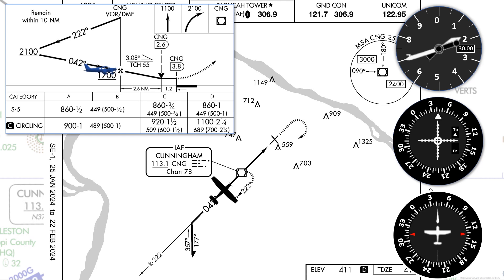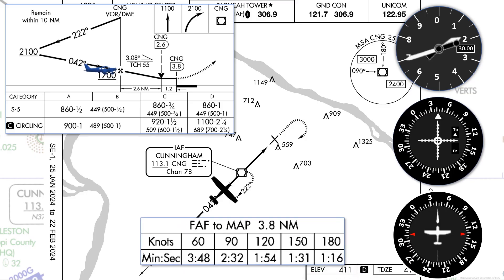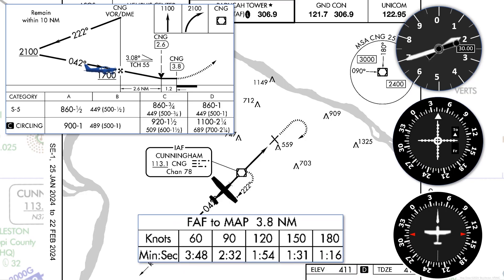From the VOR, we're going to be configuring for the approach and going down to the MDA of 860 feet. If we have DME, we can identify the missed approach point at 3.8 DME, as well as the visual descent point at 2.6. But without it, we'll need to do a timed approach. The plate shows us time from the FAF to the MAP based on ground speeds — so if our approach speed is 90 knots, it'll take 2 minutes 32 to get to the MAP. If we don't see the runway by then, we go missed.